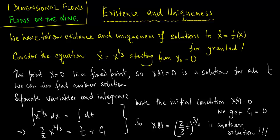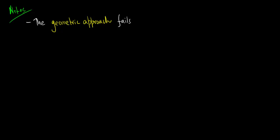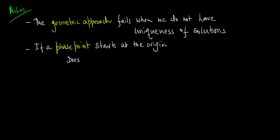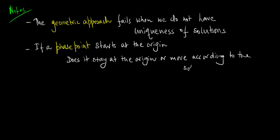So we have a situation where we actually have two solutions to the differential equation. One is x of t is equal to 0 and the other is x of t is equal to two-thirds of t to the power of 3 on 2. Here are some notes. The first point is that the geometric approach actually fails when we do not have uniqueness of solutions to the differential equation. If a phase point starts at the origin, then does it stay at the origin for all time or does it move according to the solution x of t is equal to two-thirds of t to the power of 3 on 2?